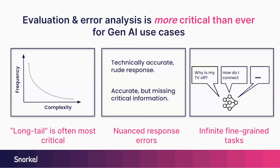As I alluded to earlier, the definition of correctness is actually quite nuanced. A response can be technically accurate but be rude, be non-compliant. It could be technically accurate but missing critical information or context. That definition of correctness is often subjective as well when you're asking annotators to label this. Being able to handle that nuance and subjectivity ends up being an added challenge in this Gen AI first world.